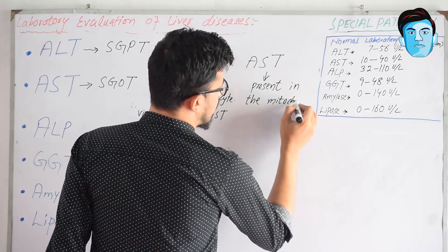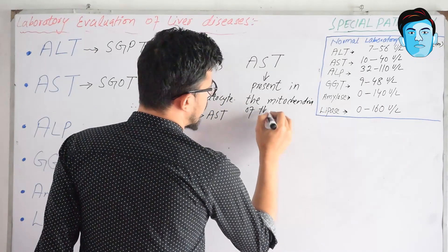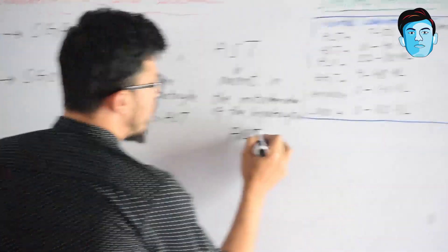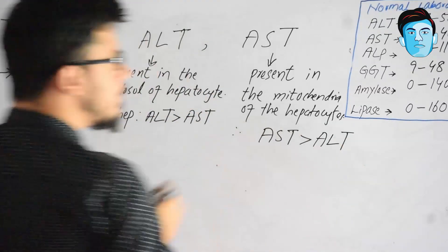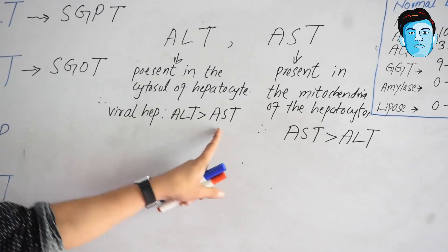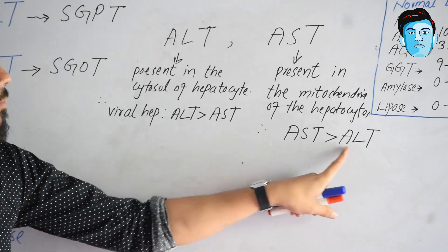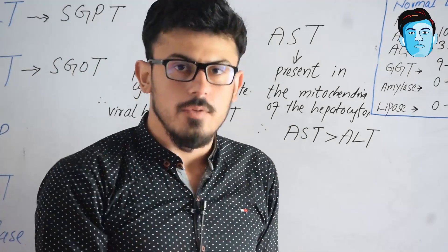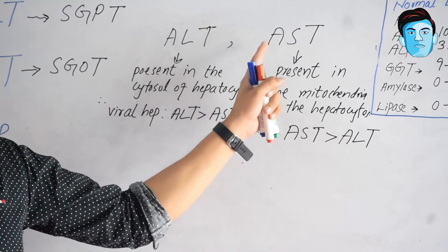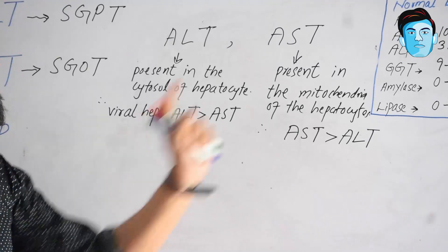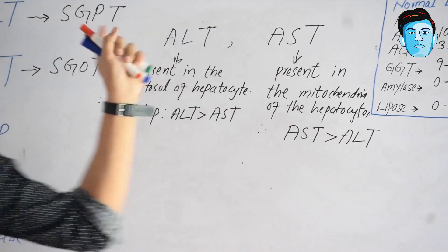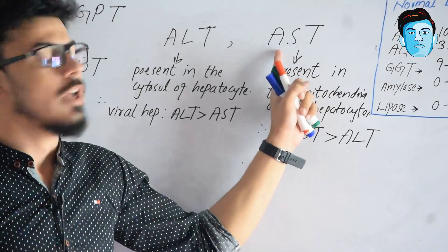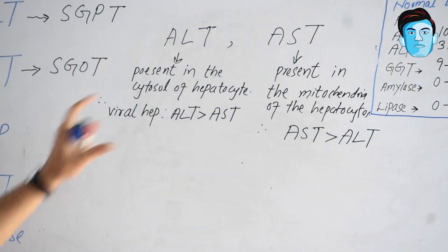AST — aspartate aminotransferase — is present in the mitochondria of the hepatocytes. In alcoholic hepatitis, the value of AST is usually more than ALT. So in viral hepatitis, ALT is greater than AST, while in alcoholic hepatitis, AST is greater than ALT. ALT is predominantly produced from the liver, making it more specific for liver cell necrosis, while AST can also be produced from skeletal muscle, heart, kidney, brain, and even RBCs, making it more sensitive but less specific.